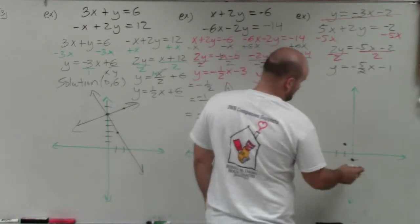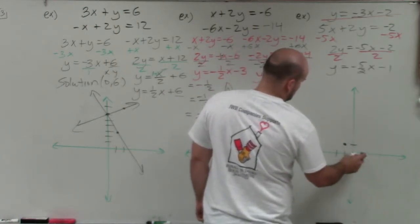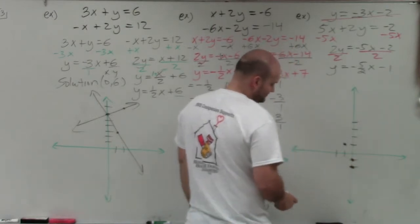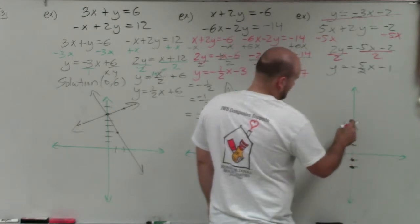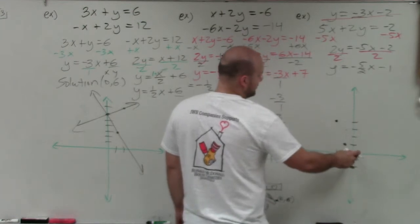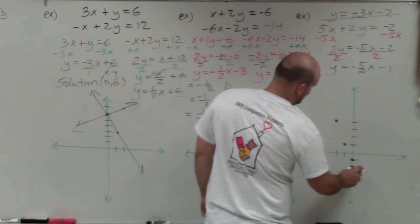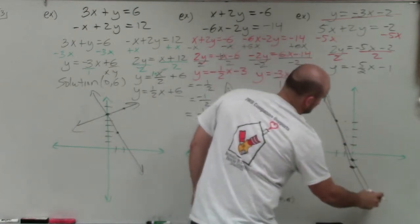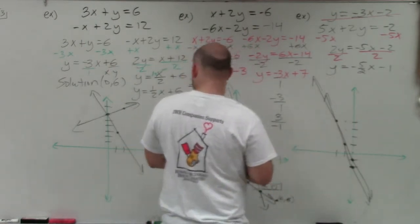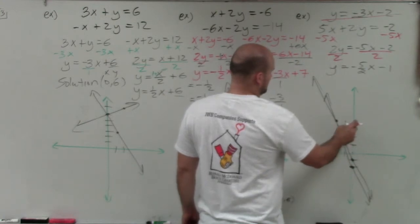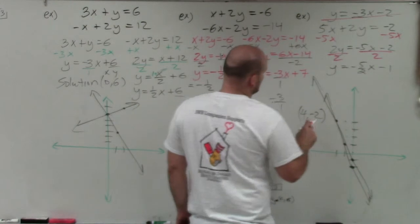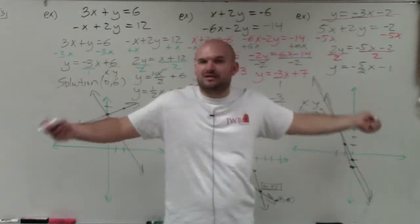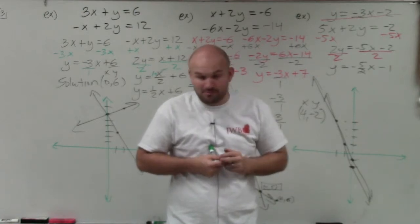So now I'm at y-intercept negative 1. I need to go up 5 to the left 2, or down 5 to the right 2. Following those points carefully, you can see the two lines intersect at one point. The solution here was (4, 5) for the previous system. For this system, the solution is (negative 2, something) — counting out the coordinates at the intersection.